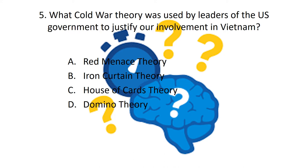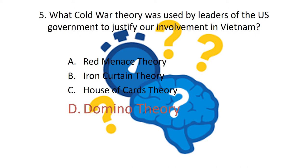Question five: what Cold War theory was used by leaders of the US government to justify their involvement in Vietnam? Was it the Red Menace theory, the Iron Curtain theory, the House of Cards theory, or the Domino theory? The answer was the Domino theory, which we'll discuss as well.